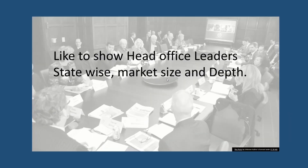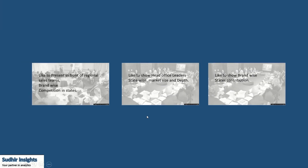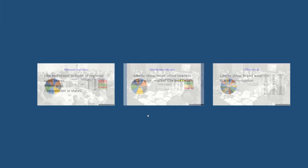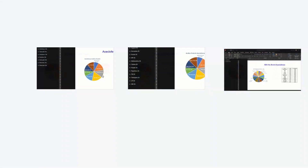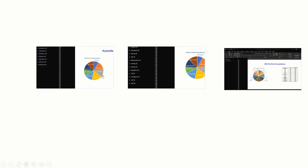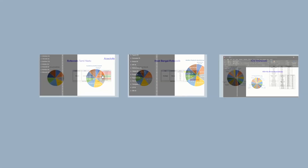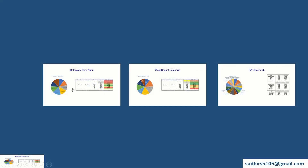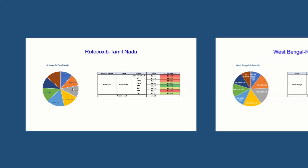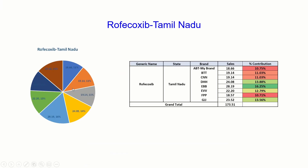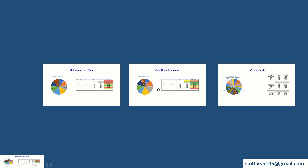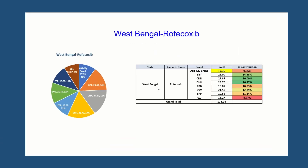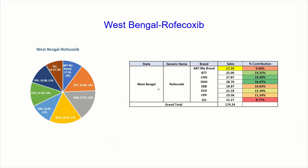Like for the sales team, region-wise, you need to have regional cuts, and for head office leaders, different statistics. But you have the limitations of time, as manually doing it would consume a lot of time and unnecessary work. You must add comments and make it more engaging.